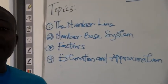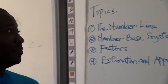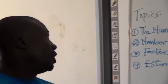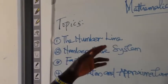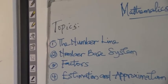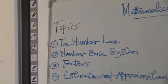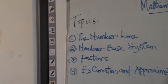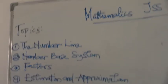We are going to be revising what we have done. We are going to be looking at the following topics: the number line, the number base system, factors, estimation and approximation. So we are going to start with the first one, the number line.